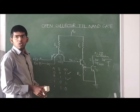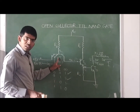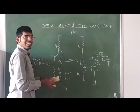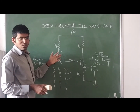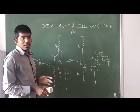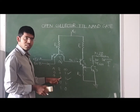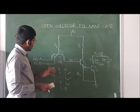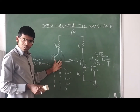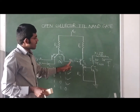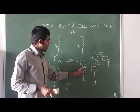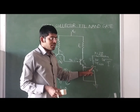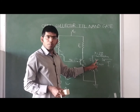Third case: input A is changed to 5V and input B is 0V. The transistor T1 is still in ON condition. The collector voltage is 0, T2's emitter voltage is 0, and T3 is in OFF condition. So the output is again high.